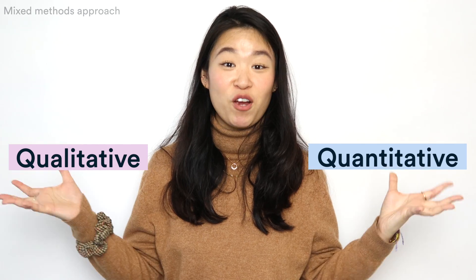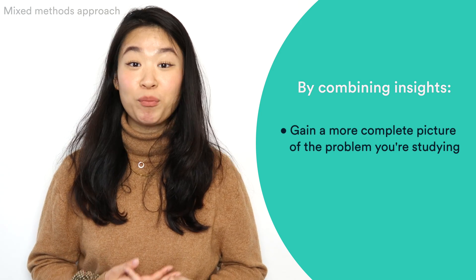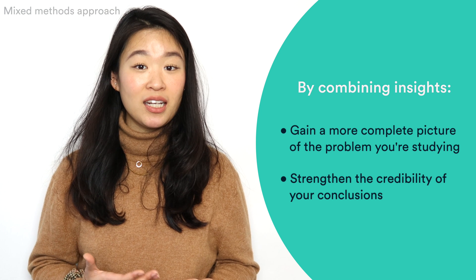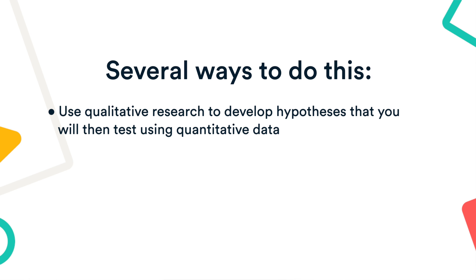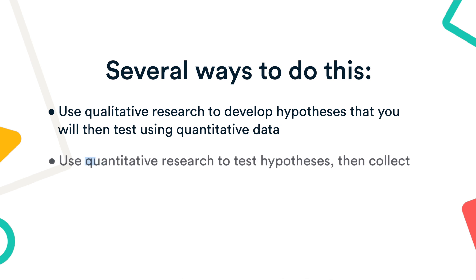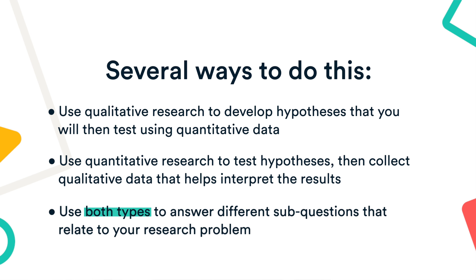You can also choose to create a mixed method design, which incorporates aspects of both approaches. By combining qualitative and quantitative insights, you can gain a more complete picture of the problem you're studying and strengthen the credibility of your conclusions. There are several ways you might do this: use qualitative research to develop hypotheses that you will then test using quantitative data; use quantitative research to test hypotheses and then collect qualitative data that helps interpret and contextualize the results; or use both types to answer different sub-questions that relate to your research problem.